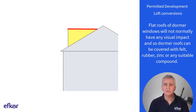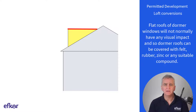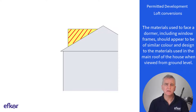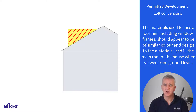Flat roofs of dormer windows will not normally have any visual impact, and so dormer roofs can be covered with felt, rubber, zinc, or any suitable compound. The materials used to face a dormer, including window frames, should appear to be of a similar colour and design to the materials used in the main roof of the house when viewed from ground level.